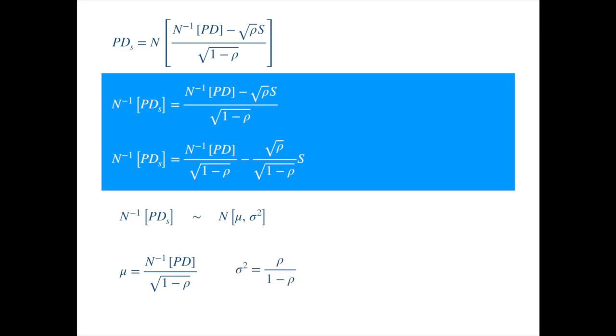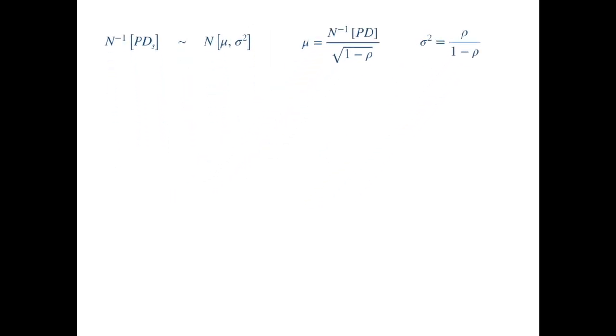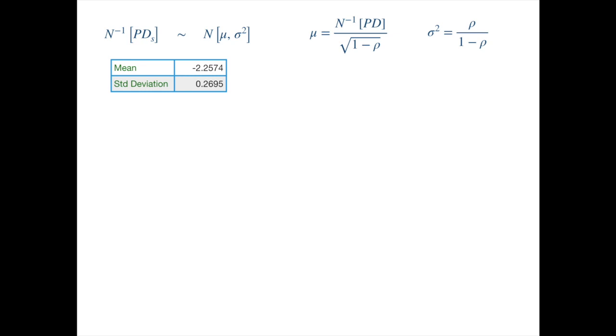These can be easily verified by noting that the mean of S is 0 and the variance of S is 1. So we can use the mean and variance of the inverse normal of the default rates that we have already calculated. And then solve the two equations for the PD and the correlation.